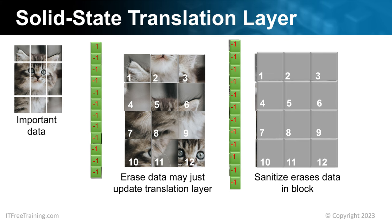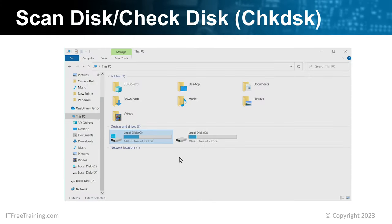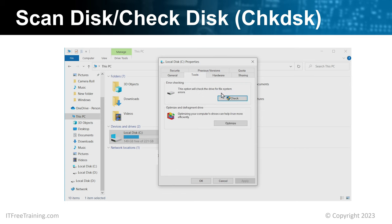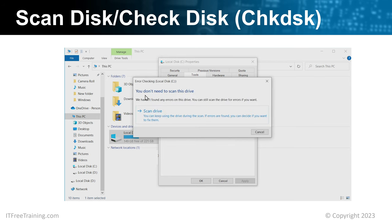I will next have a look at what you can do if your storage device develops errors. Your storage device may have developed some errors that can be corrected. The most common cause is the computer losing power while it is operating, either by turning it off without a chance to shut down or the power suddenly being cut. If errors occur within a file system on the storage device, ScanDisk and CheckDisk may be able to fix these problems. To run ScanDisk, open Windows Explorer, right-click on the drive, select Properties, then the Tools tab, and press the Check button. In this case, there are no errors on the drive and as it is a solid state drive, the check will not take too long to complete.